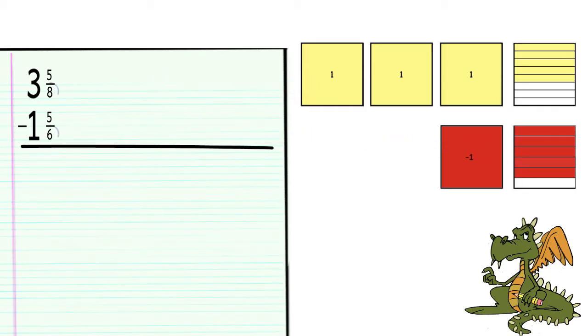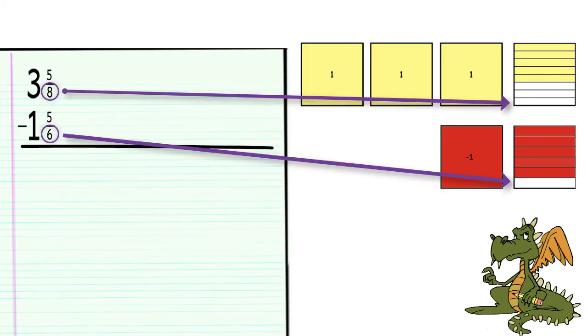The first thing we need to check is do we have a common denominator? Are the fractions representing the same size pieces? We can tell that answer is no. A sixth is larger than an eighth.